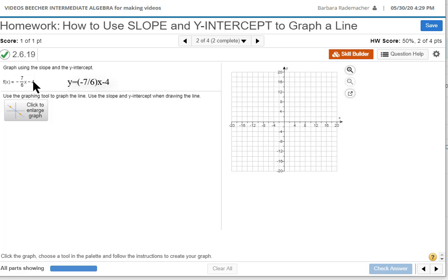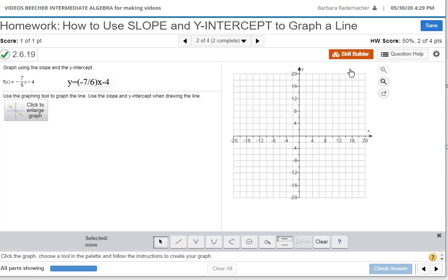I go to negative 4 on the y-axis and I click. From there I'm going to move down 7 and to the right 6 and click again. Here we go. Now I'm going to click here.